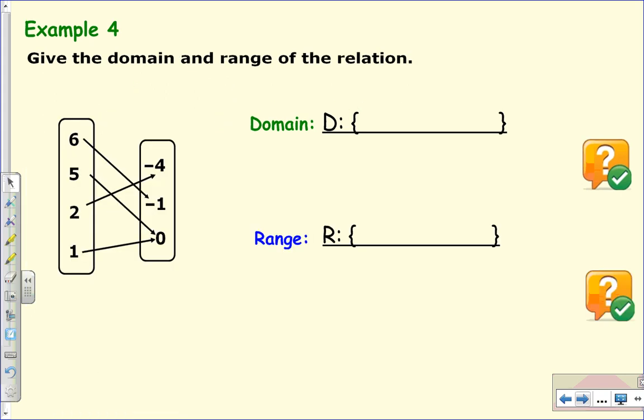Now, what if you're given a mapping? Can you list the domain and range? Now, when we list the domain and range, we generally list it in numerical order. So I notice my domain would be 1, 2, 5, and 6. Now, the range from numerical order would be negative 4, negative 1, and 0. Isn't it curious how there are more values in the domain than the range? Well, that is possible in a relation.